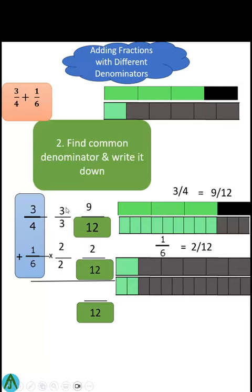We are multiplying by 3 thirds and 2 halves, which are both different ways of saying 1. Multiplying by 1 doesn't change the value. Now we're adding 9 twelfths and 2 twelfths, and we can do that because they're the same size unit.